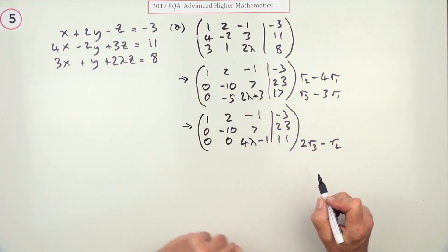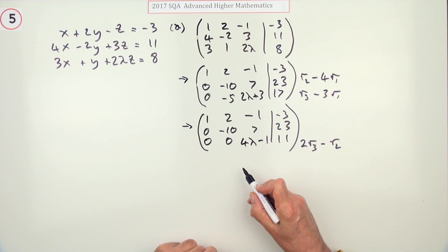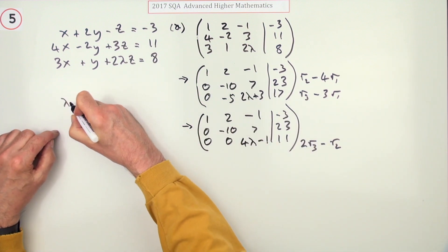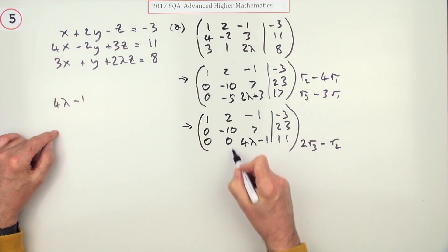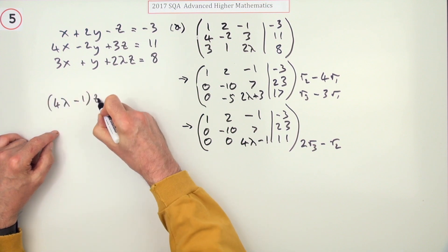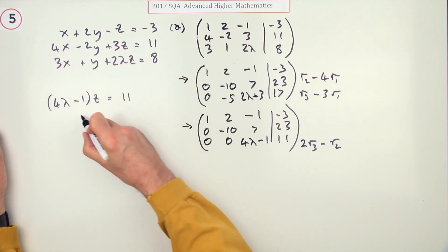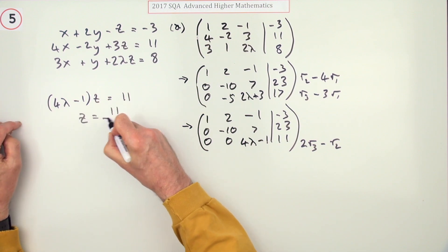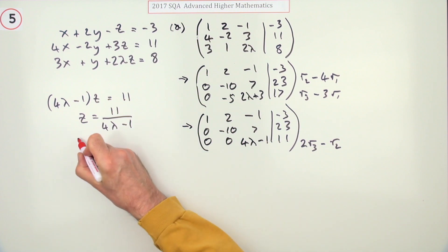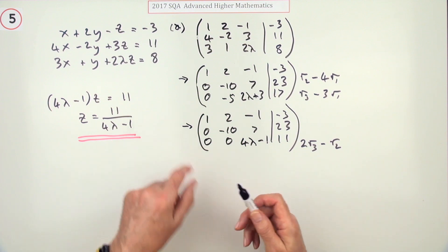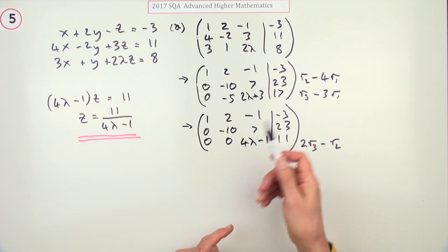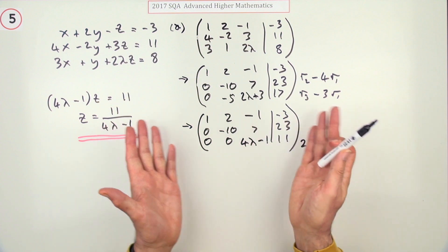I now find that I can say what's the value of z that comes out of this. I'll just put it over here. Well 4 lambda minus 1 times z is equal to 11, which means that z is equal to 11 over 4 lambda minus 1. Not the nicest looking of expressions that you hope to get when you do your Gaussian elimination but that's what came out of it.